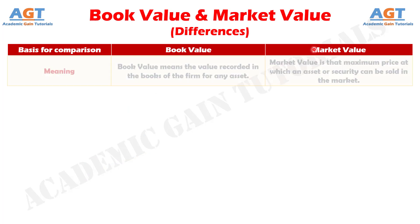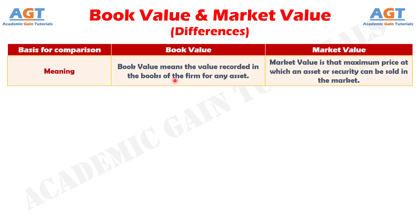Difference number one: the value of assets or securities as indicated by the books of the firm is known as book value, whereas market value is the current value of the firm or any asset in the market on which it can be sold.